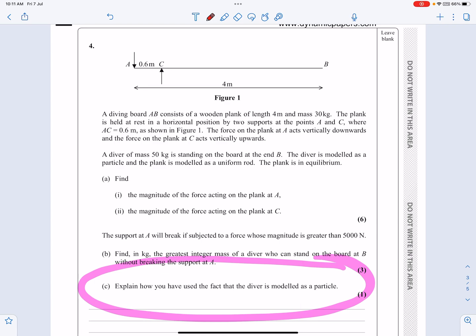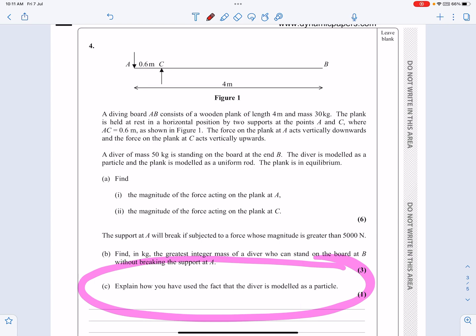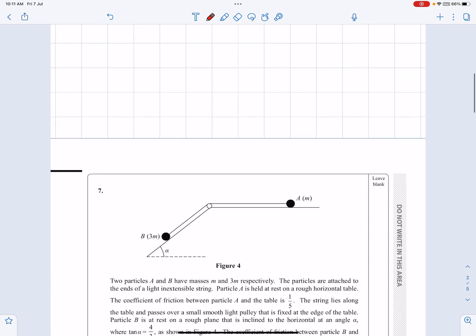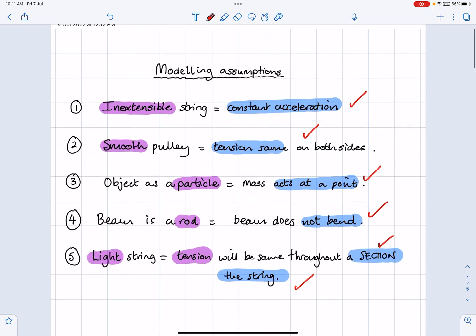Explain how you've used the fact that the diver is modeled as a particle on this one. Show how you've used the information that the P is a smooth pulley. So this list of, what have I got, five of them are the ones that I've seen so far. If it mentions an inextensible string, that means the acceleration is going to be constant throughout your model.